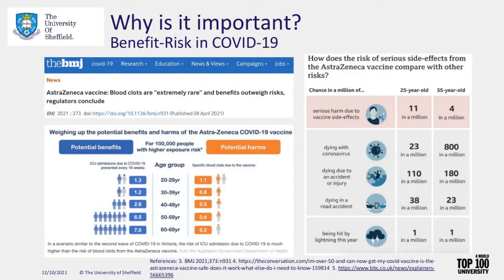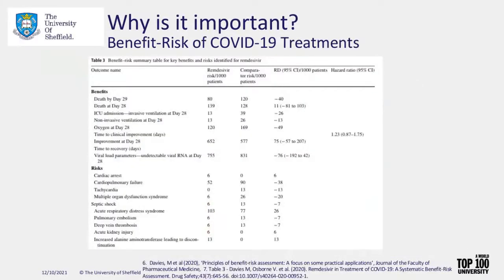The BBC article used an infographic to make the metrics comparable and aid understanding for patients and the public about the vaccine outcomes. That's really key in benefit-risk: being able to make outcomes comparable. There's also a summary table - one of the key benefit-risk methods I'll talk about later - completed for a potential COVID treatment, clearly outlining benefits and risks compared to placebo. A positive benefit-risk balance was found for treating COVID with this drug, and it was used in practice.